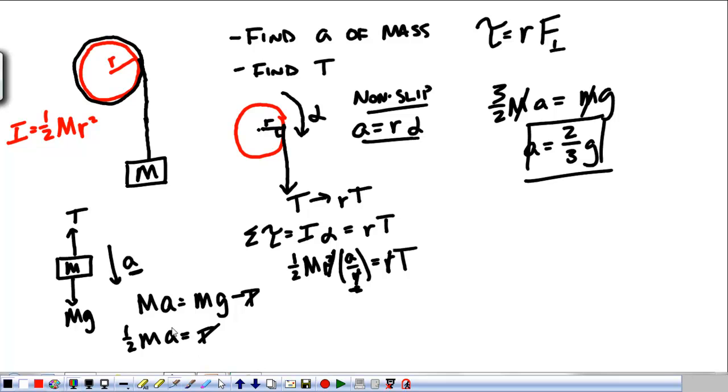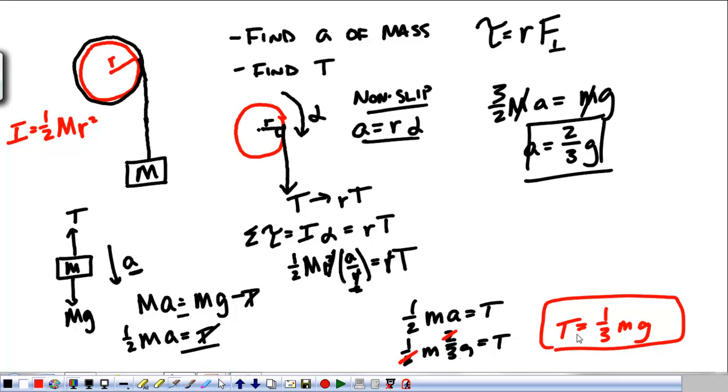Now that we have the acceleration, we just come back to one of these equations to find the tension. One-half MA is equal to the tension. So one-half M times two-thirds G is equal to the tension. So we get the two's to go away, and that tension is equal to one-third of our weight. But it's wrapped around the drum, so it's slowing down. Okay? So what giving the pulley mass does is give us one more equation to use. It throws in one more unknown. It gives us one more equation.